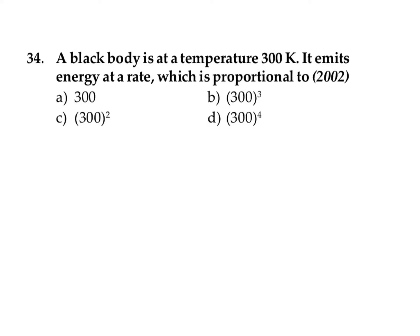A black body is at a temperature of 300 kelvin and it emits energy at a rate which is proportional to T⁴. We know that the energy emitted by a black body is E = σA·T⁴. So we can write it over here — this power is directly proportional to the temperature of the object, which is 300 raised to 4.